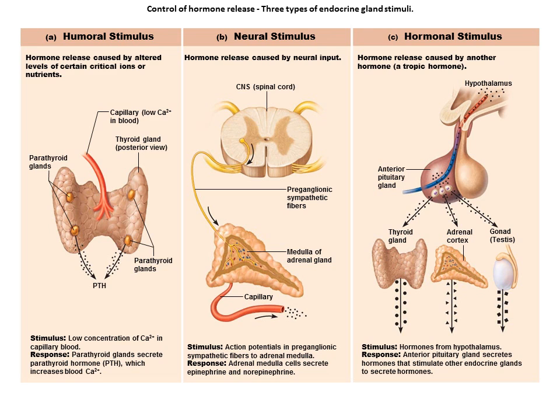In the case of hormonal stimuli, which is the majority of hormone secretion cases, hormones stimulate other endocrine organs to release their hormones. Hypothalamic hormones stimulate the release of most anterior pituitary hormones, and anterior pituitary hormones stimulate targets to secrete still more hormones.